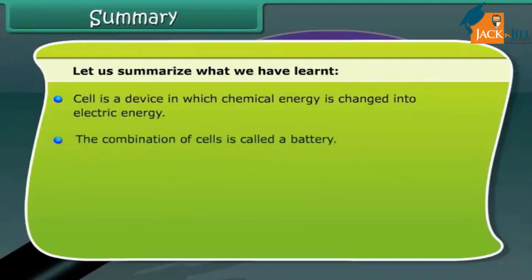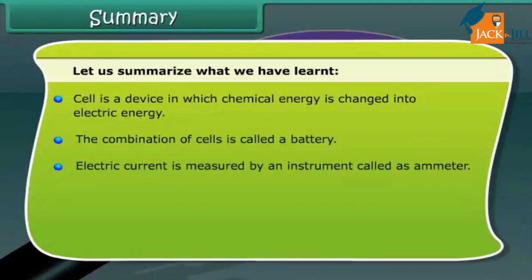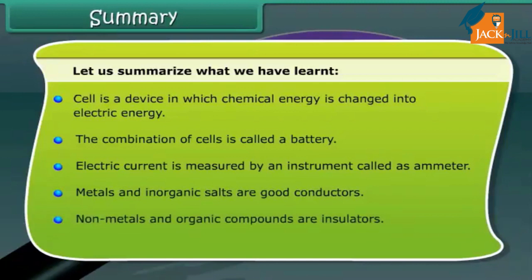The combination of cells is called a battery. Electric current is measured by an instrument called an ammeter. Metals and inorganic salts are good conductors. Non-metals and organic compounds are insulators.